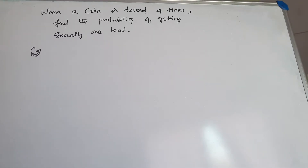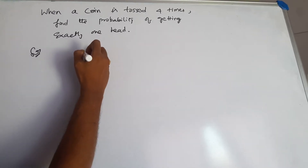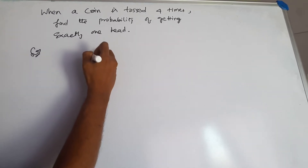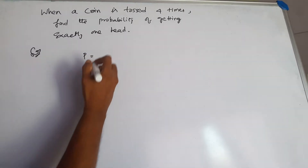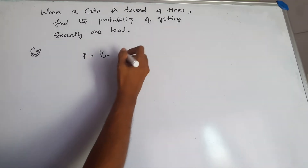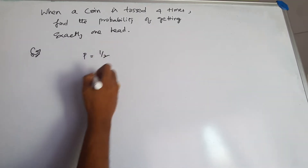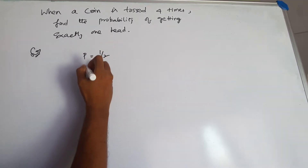If the coin is tossed 4 times, find the probability of getting exactly 1 head. The probability is 1 by 2. Probability of getting 1 head.